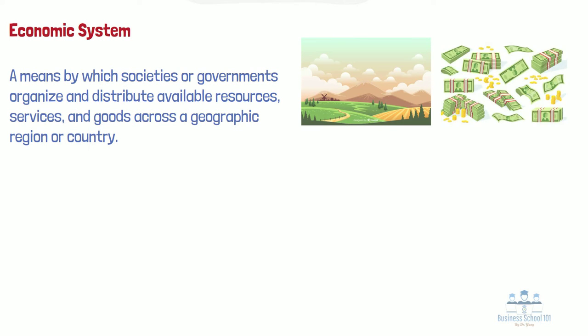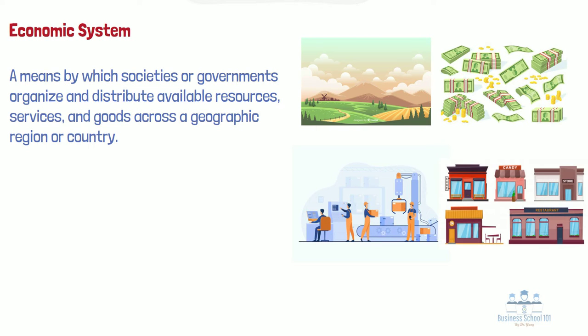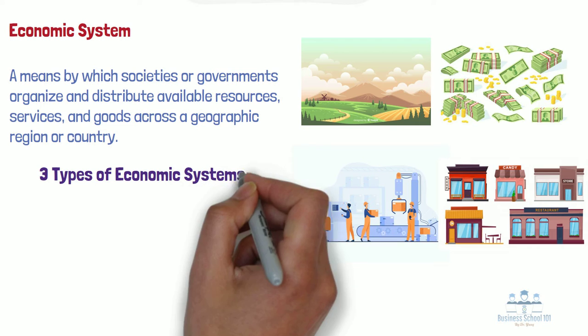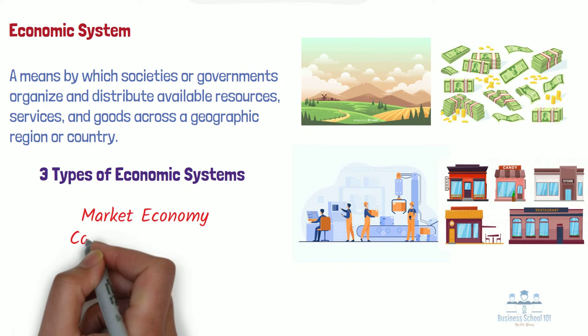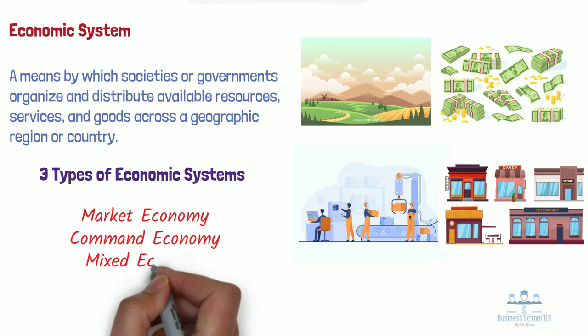Economic systems regulate factors of production including land, capital, labor, and physical resources. It encompasses many institutions, agencies, entities, decision-making processes, and patterns of consumption that comprise the economic structure of a given community. We can identify three general types of economic systems in the world: the market economy, command economy, and mixed economy.